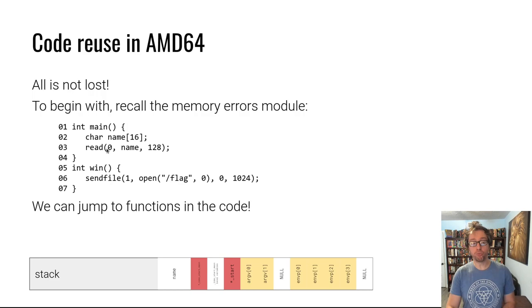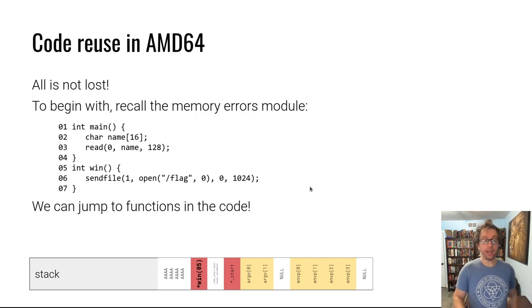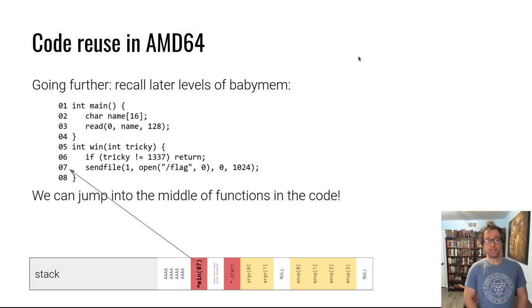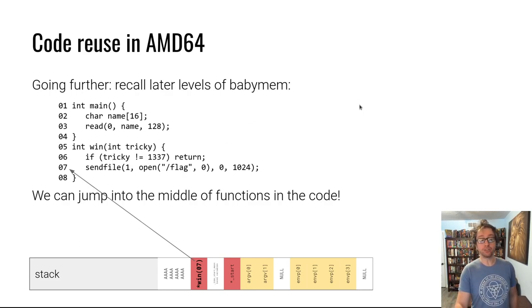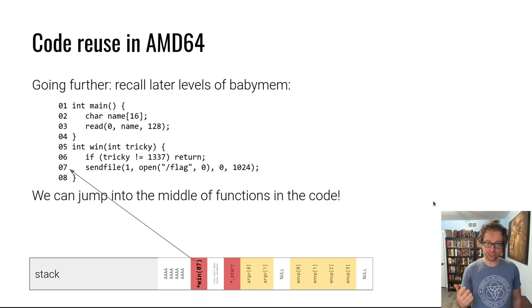In the memory errors module, there was a win function to which you redirected execution by overflowing a vulnerable buffer and overriding the return address to point to win. This is the beginning. In later levels of the memory errors module, we had a tricky win function where you would need to pass in an argument of 1337, or it would refuse to give you the flag. But you figured out that if you control the return address completely, you can just jump right past that check partway through the function. Now we're taking another step toward advanced code reuse — you reused part of a function, and you can go even further.